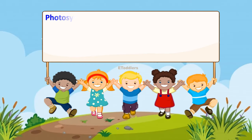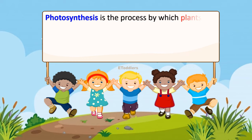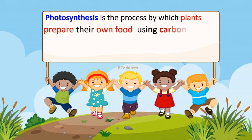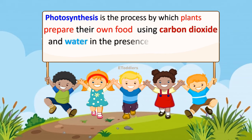Photosynthesis is the process by which plants prepare their own food using carbon dioxide and water in the presence of sunlight and chlorophyll.